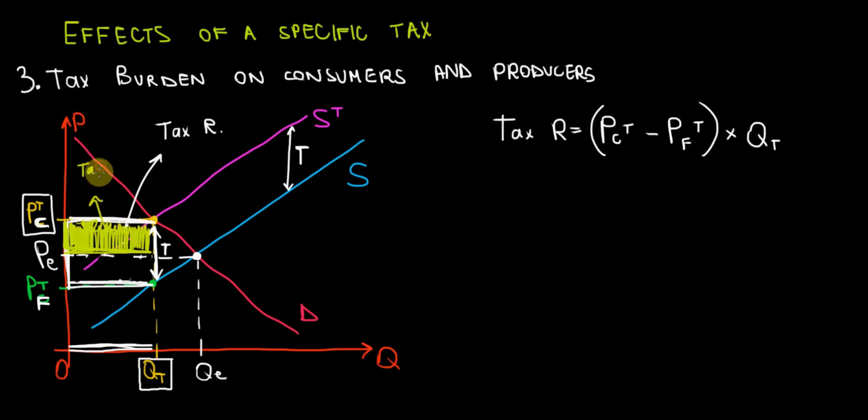And with the same logic, we know that some of the tax revenue that the government collects is coming from the firms, in the way that the firm is actually paying that tax to the government. And that's going to be the difference between the price equilibrium that used to be on the market before the tax and the price that the firms actually get to keep.